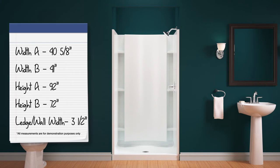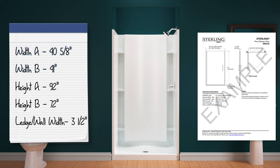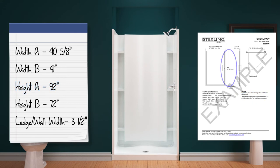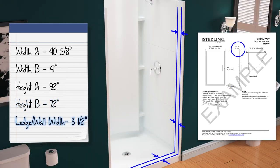Once you have all your measurements, go online and reference the specification sheet for the door you are looking to purchase. Confirm that the width of your opening falls between the opening width minimum and maximum numbers listed on the specification sheet. Then confirm the height of your opening meets the minimum installation requirement for the door, and the height of your showering space is greater than the door height. Finally, confirm the width of your ledge and walls are greater than the depth of the door.